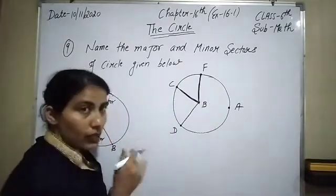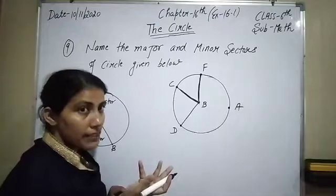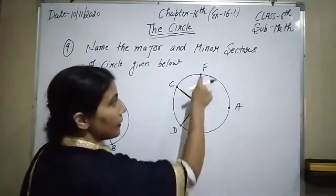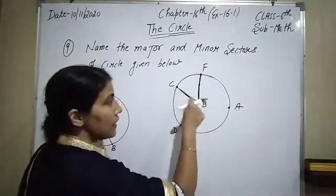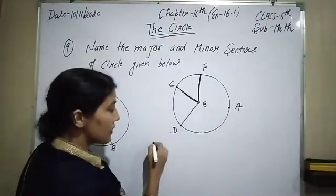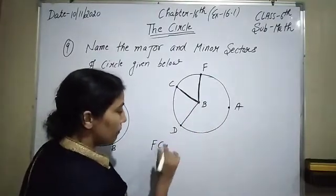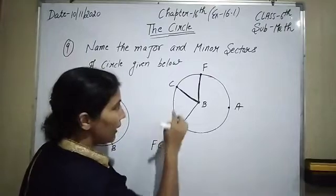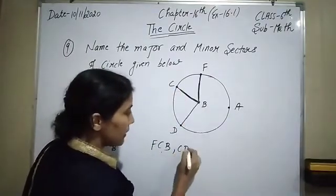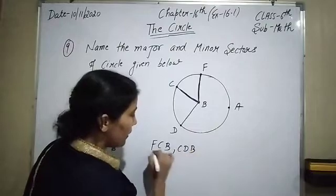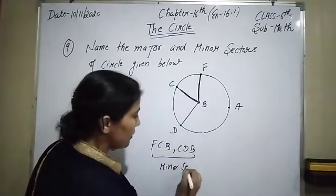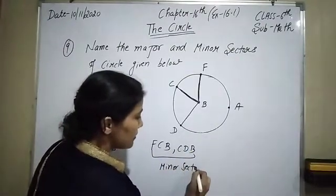This one is the big portion, so that is called the major sector. We can say that FCB — or BFC — is a minor sector. So FCB and CDB are our minor sectors.